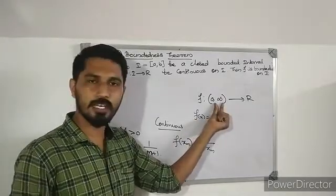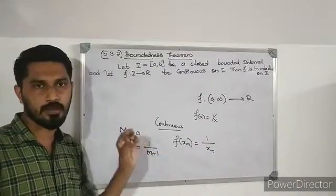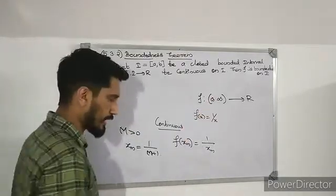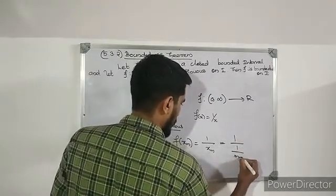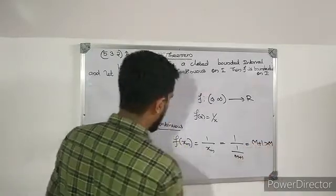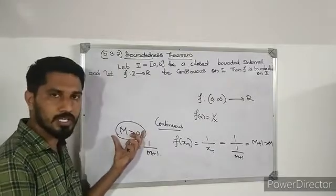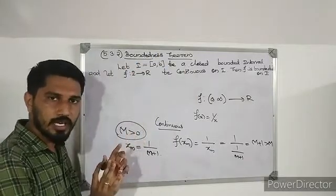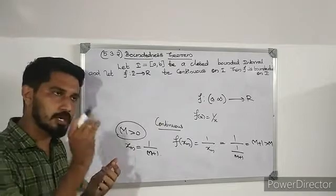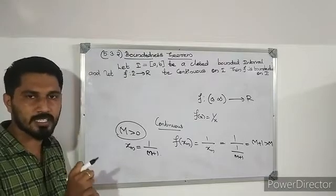Therefore the function boundary — the range — goes to infinity. We have 1/xm = m+1, and as the number m increases, the function values grow larger. The function values are not bounded. This shows that a continuous function on an open interval need not be bounded.